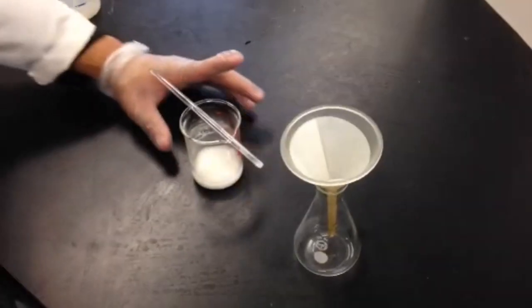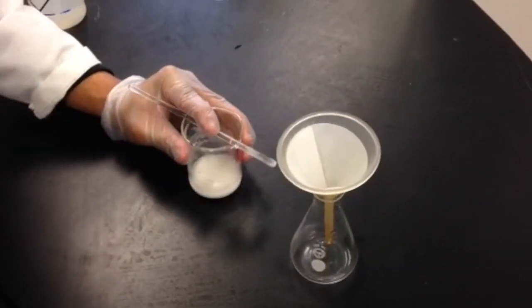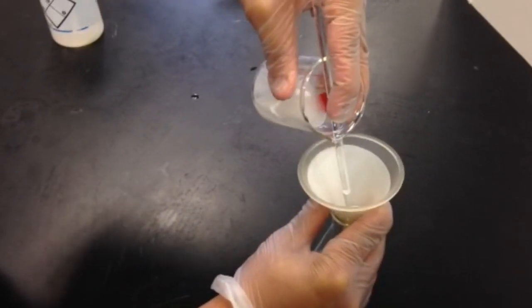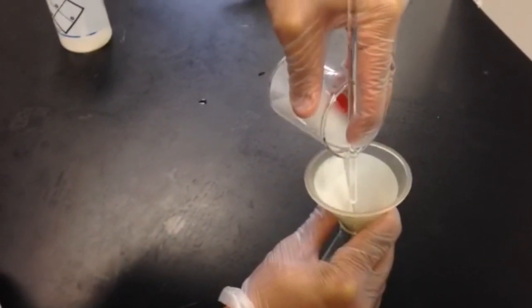Place a stirring rod flat against your beaker containing your mixture. Be sure the stirring rod is aligned with the spout of the beaker and slowly pour your mixture down the stirring rod into the funnel.